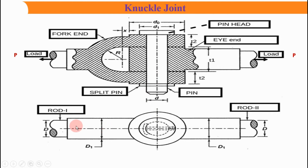In the diagram you can see rod one and rod two subjected to tensile load, with notations: fork end, pin head, eye end, load arrows, and dimensions — d, D, d1, D1, t1, t2, r, x, and P. Understanding all these notations is essential. After assembling, we need to check what kind of failures will act on the joint, and those will be clarified in the next slide.